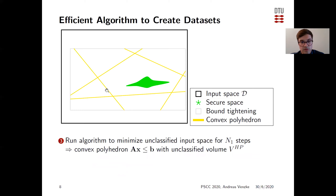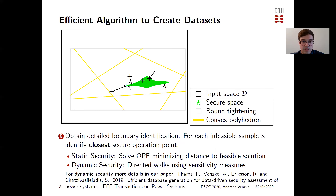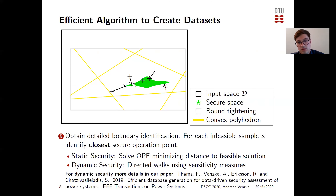Then we run the algorithm to minimize the unclassified input space, obtaining a convex polyhedron shown in yellow with unclassified volume V superscript HP. We then draw and classify N2 samples from within this convex polyhedron. In the next step, we perform detailed boundary identification: for each infeasible sample X, we identify the closest secure operating point. For static security, we solve an OPF minimizing distance to the feasible solution. For dynamic security — covered in another work — we use directed walks and sensitivity measures to reach the dynamic security boundary.